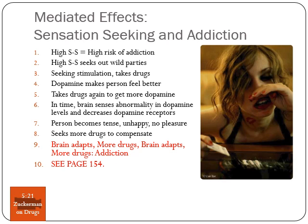Say you're a high sensation seeker who seeks out wild parties and takes drugs. The dopamine that comes with many drugs makes a person feel better, so you take drugs again to get more dopamine. In time, the brain senses these abnormal dopamine levels and decreases its dopamine receptors. Now your brain can no longer receive pleasure from doing regular things — you become tense and unhappy, and keep seeking more drugs to compensate. The brain adapts, more drugs, brain adapts more — addiction. It's a catch-22: you can't get past it easily, and it's going to be a dark period before it gets better.